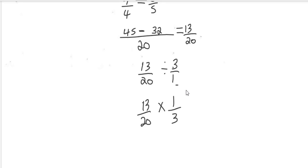Check to see if we can cancel; however, there's nothing to cancel, so we're just going to multiply across. So this is 13 over 60, and that will be your final answer. Thank you so much for watching.